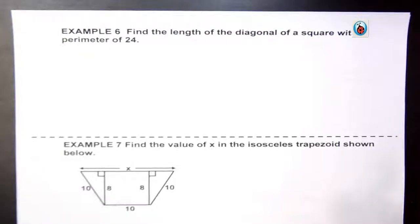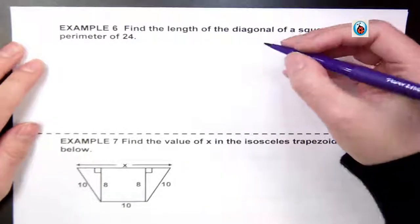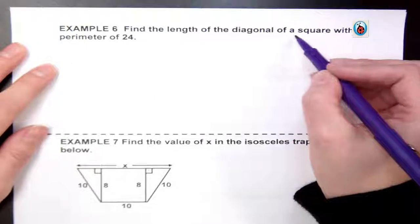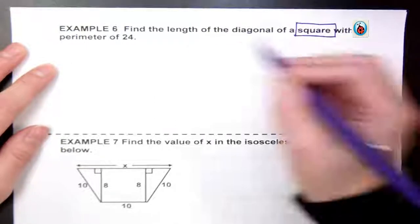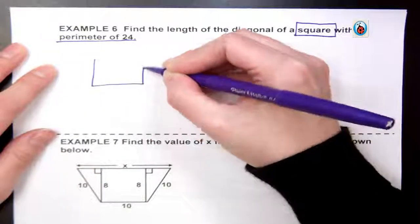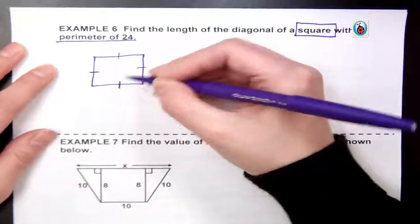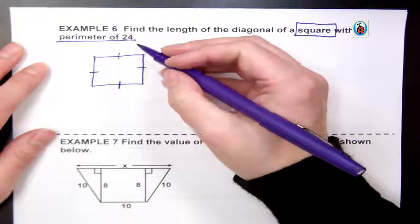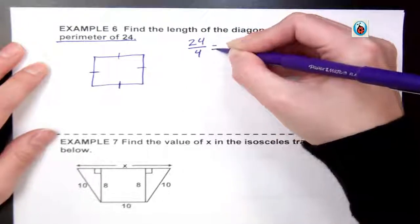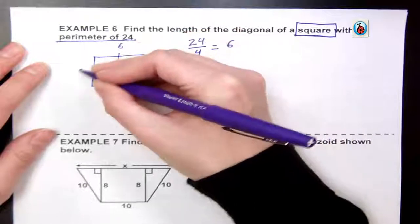Go ahead and turn to your last page of notes. We have two last examples. Example 6 tells me to find the length of the diagonal of a square with a perimeter of 24. Our first step, of course, is to draw that square. Square means all 4 sides are the same. Perimeter means those 4 sides have been added together. We just take 24 and divide it by the 4 sides to come up with 6 on each side. That's what will give us the 24.